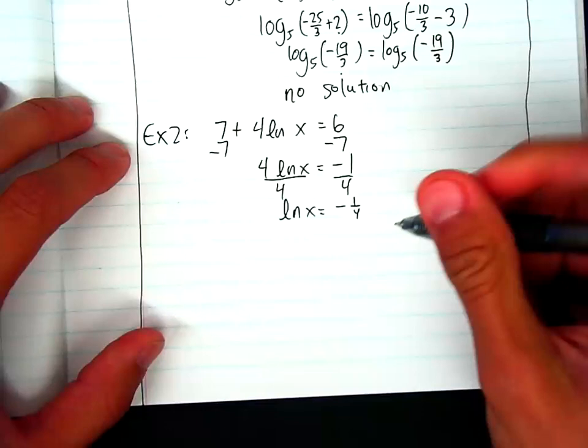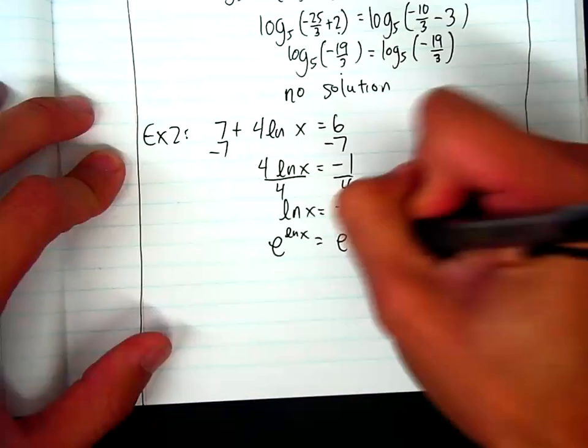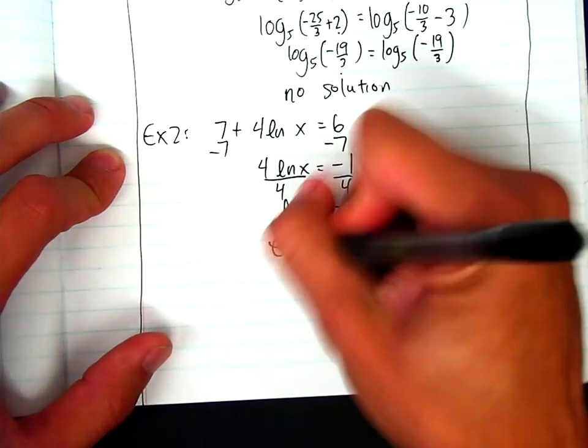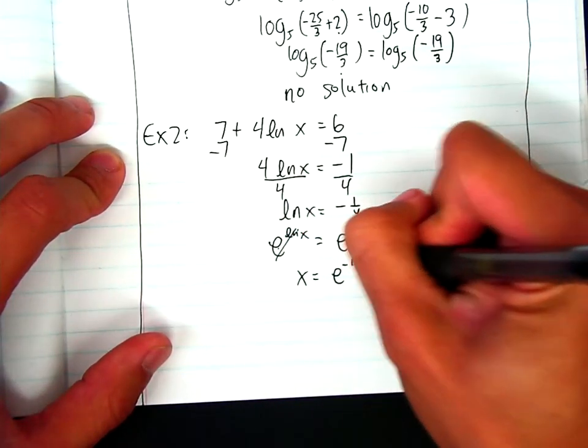And then at this point, I want x all by itself. And if you remember that e is the inverse of the natural log, so I'm going to e both sides. So I'm actually going to e both sides. So now the natural log of x will become an exponent, and the negative 1 fourth will become an exponent. And then the e and the natural log will cancel out.